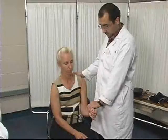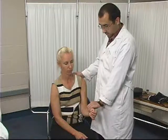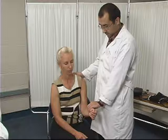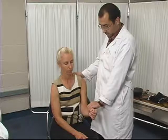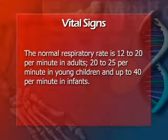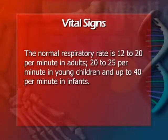To obtain a client's respiratory rate, place one hand on the client's chest or back and count the number of respirations for 30 seconds. Multiply this number by 2 and you will have the client's respiratory rate. Be sure to note any abnormal sounds associated with breathing and if breathing is labored. The normal respiratory rate is 12 to 20 per minute in adults, 20 to 25 per minute in young children, and up to 40 per minute in infants.